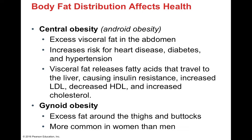How your body fat is distributed affects your health and disease risk. Central obesity is called android obesity — when you get that extra tire around your belly — and it includes excess visceral fat in the abdomen. This is associated with increased risk for heart disease, diabetes, and hypertension. Visceral fat can also release fatty acids that travel to the liver, causing insulin resistance and issues with blood glucose levels. It can also increase LDL cholesterol and decrease HDL cholesterol — you want more HDL than LDL — and can increase your overall cholesterol level.